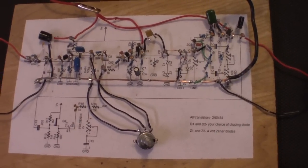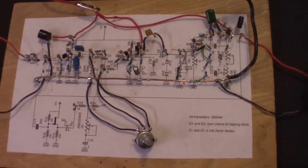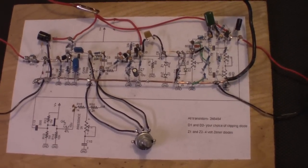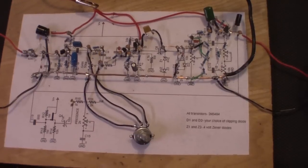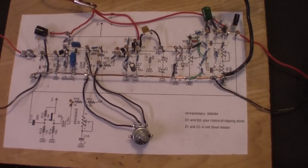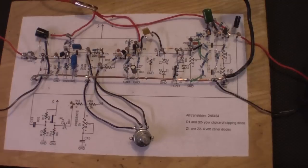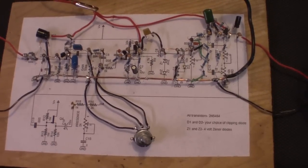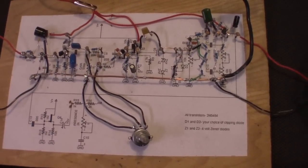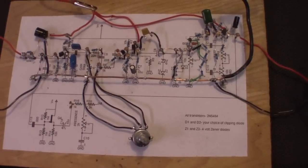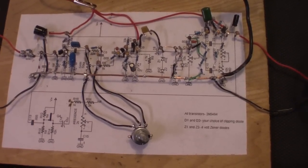What we got here is a modified Randall preamp. This circuit's been floating around on the internet - I can provide links to it. But basically it's the preamp end of an RG100ES, which is the same amp that Dimebag Darrell recorded Cowboys from Hell with.